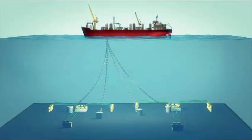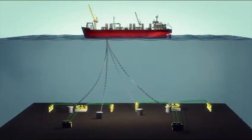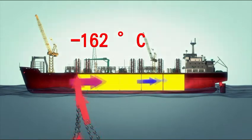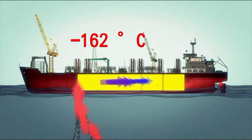When in operation, Prelude will draw 50 million liters of cold water from the sea every hour to help the cooling process. It chills the gas to minus 162 Celsius, shrinking its volume 600 times.